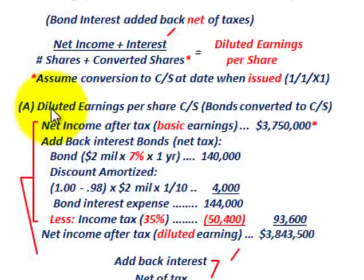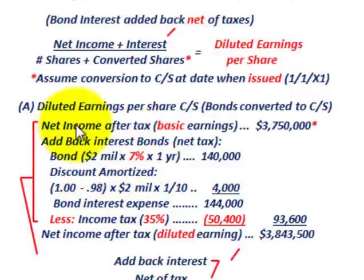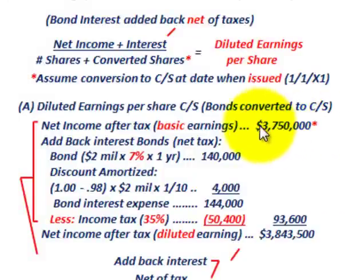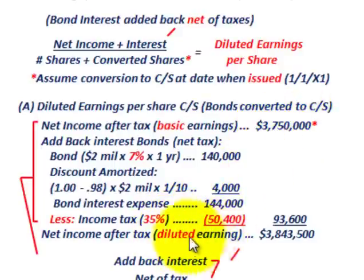For diluted earnings per share, since the bonds are converted into common stock, we have to add back the interest expense after taxes. Our net income after tax — the basic earnings — was $3,750,000. That amount included the interest expense on those bonds. Since we're converting those bonds into common stock at the beginning of the year, we need to back that interest expense out for our diluted EPS calculation.